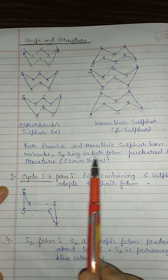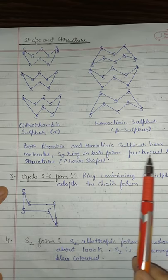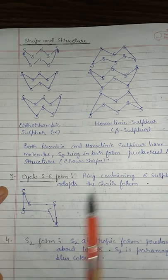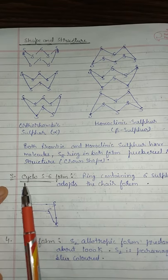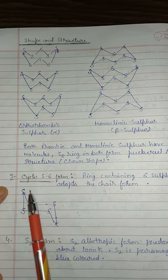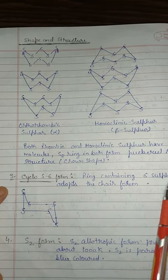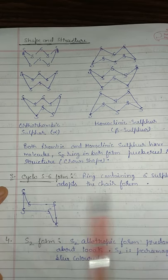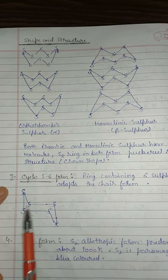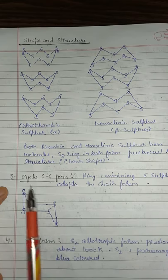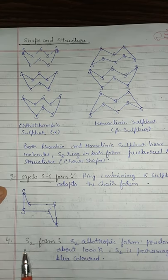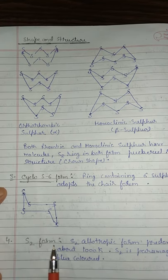In both forms, the structure is called a puckered ring structure or crown structure. One other allotropic form is cyclo-S6, which contains 6 sulfur atoms and adopts the chair form — similar to a cyclohexane chair conformation. The cyclo-S6 form is a very uncommon allotropic form.